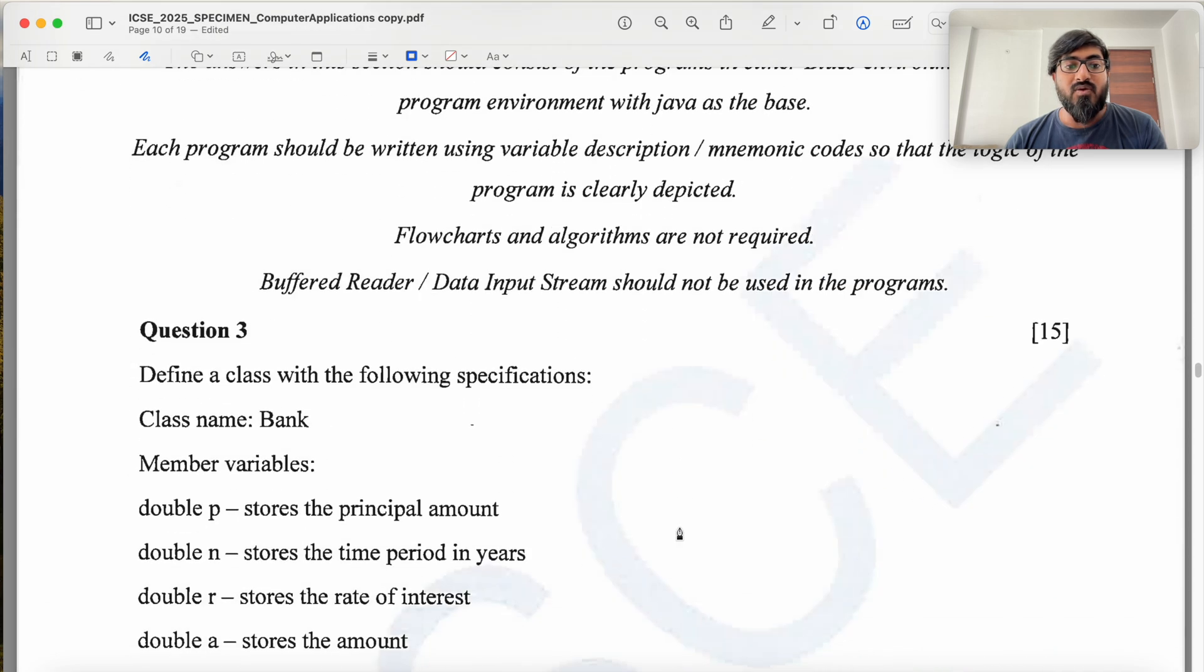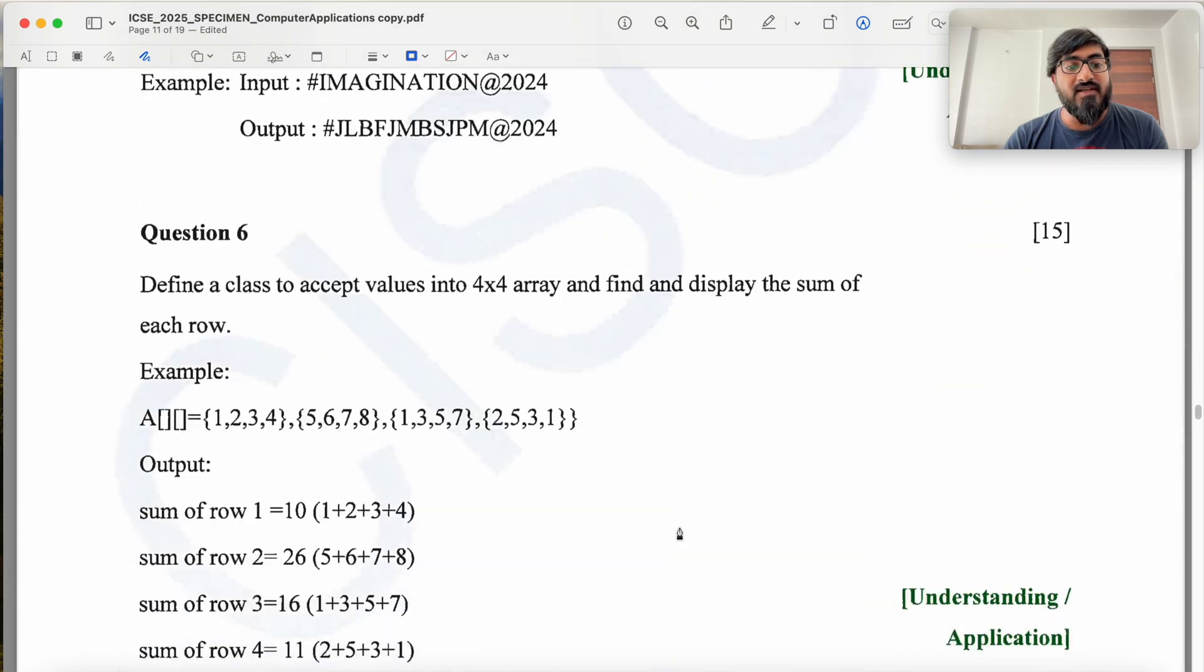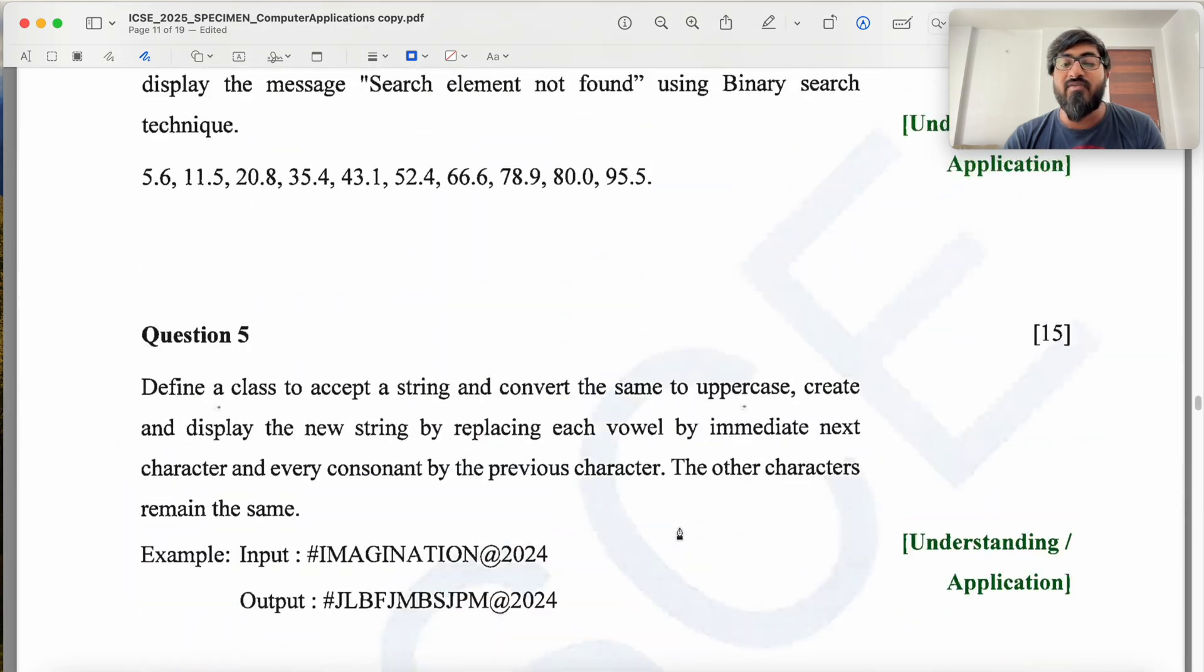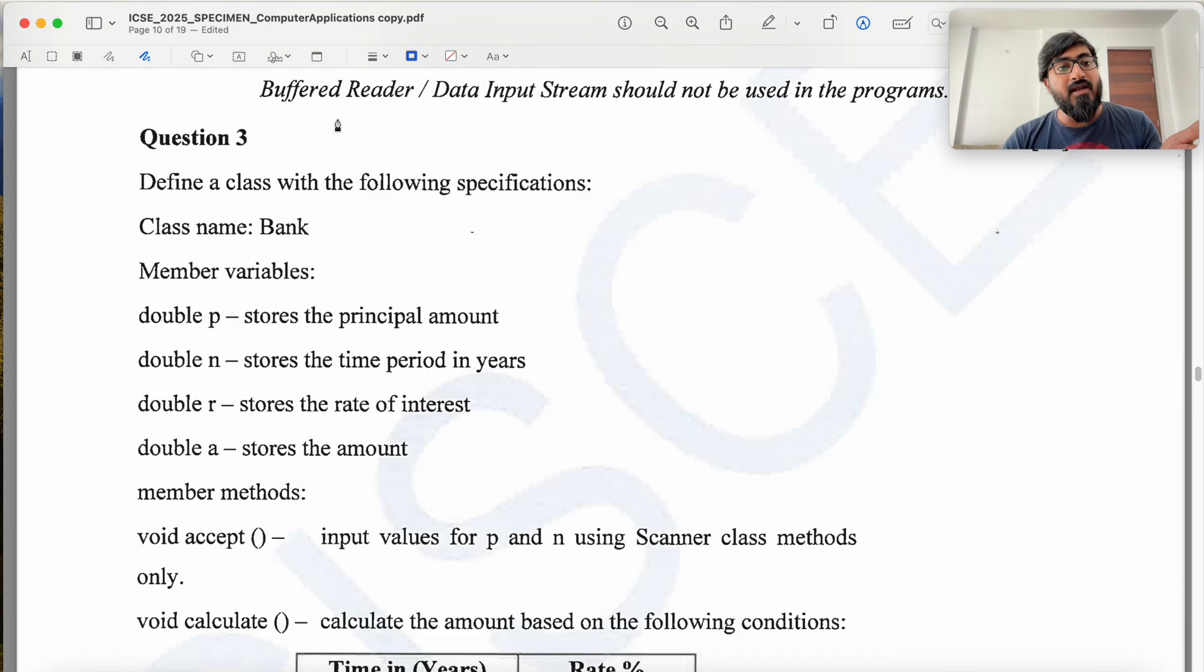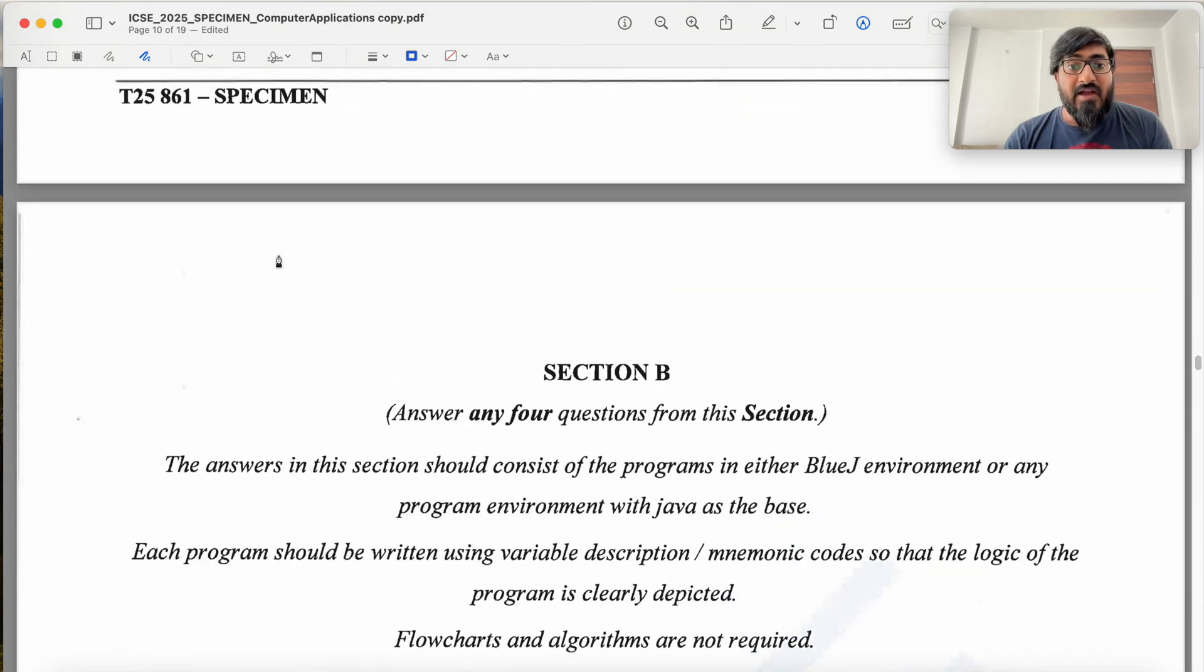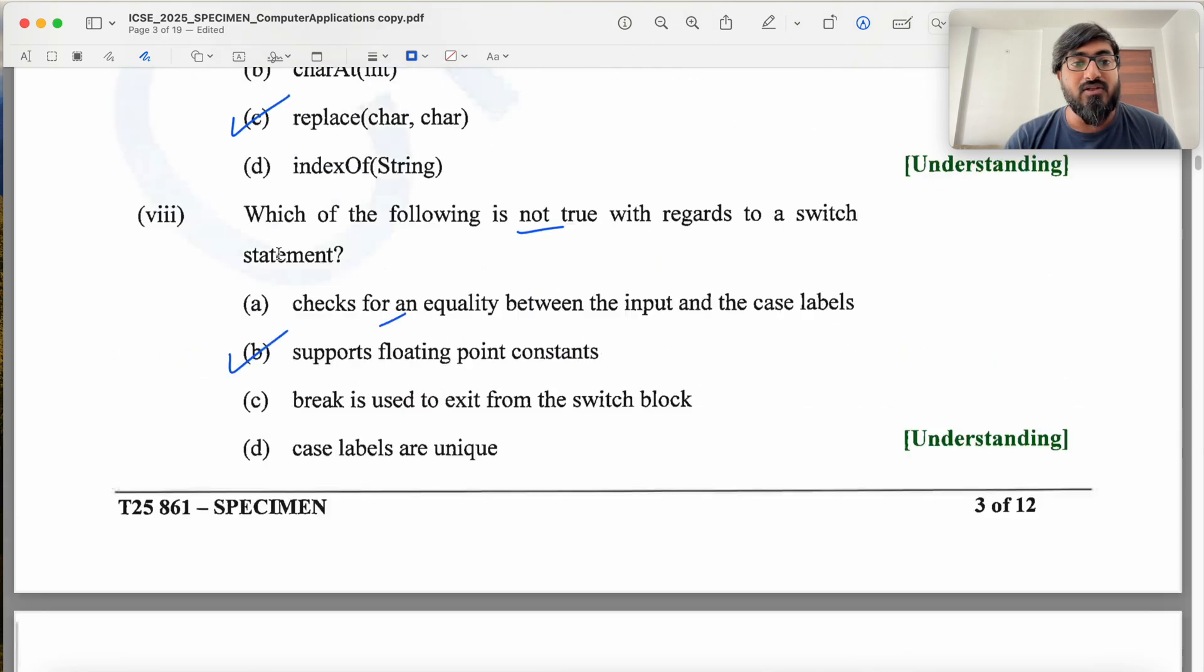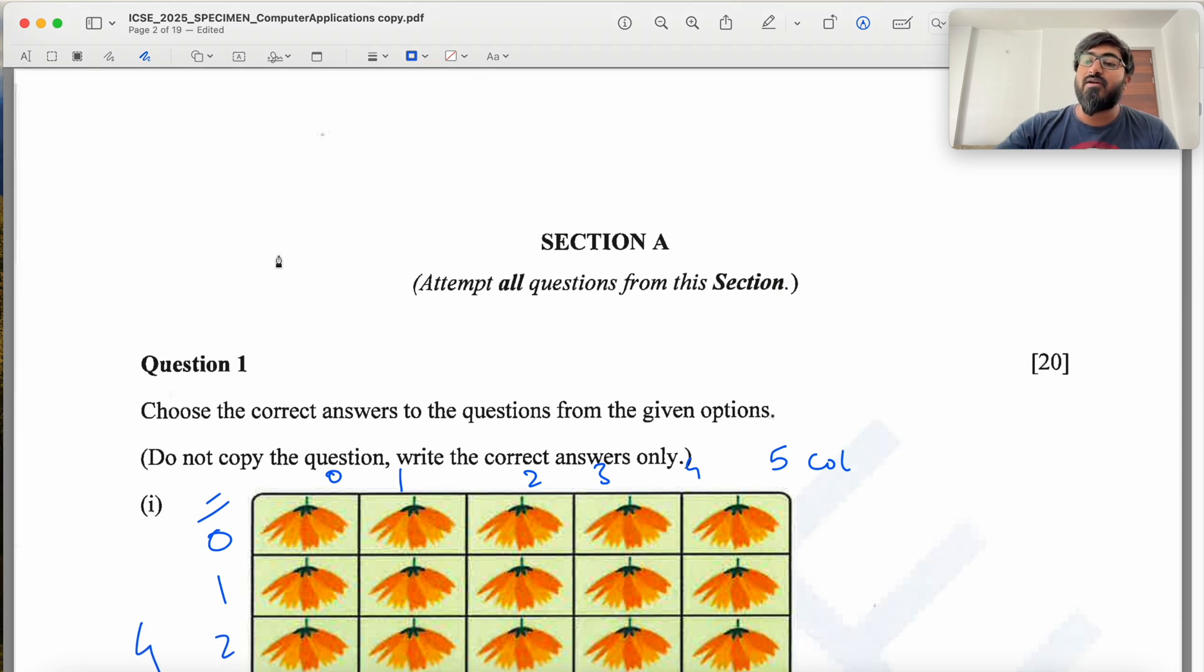So questions 1 and 2 are done, and question 3 onwards I have solved separately in separate videos in detail, explaining how to approach the code and how to solve the code. Links for videos explaining each of these questions 3, 4, 5, 6, 7, 8, you can find in the description of this video. I have already put that all into a separate playlist as well. And codes for all these questions you can also find in the description. I will also put up a document in the description where you have answers for all the questions all together. This was the solved paper of ICSC-2025 Computer Application Specimen Paper. I hope you like this video and this was helpful. If there is any doubt or a part you don't understand, please let me know in the comments. I always try to answer all the comments. Please like this video, subscribe to my channel and thank you for watching.